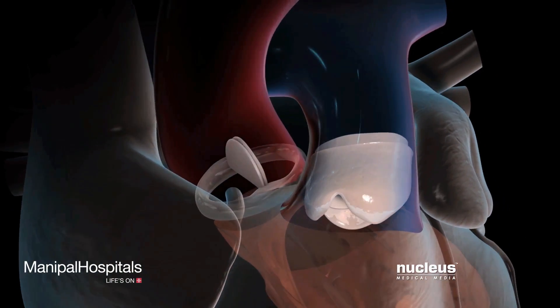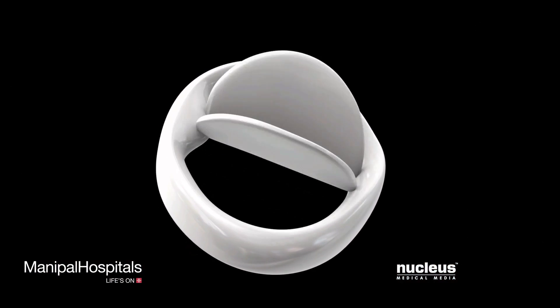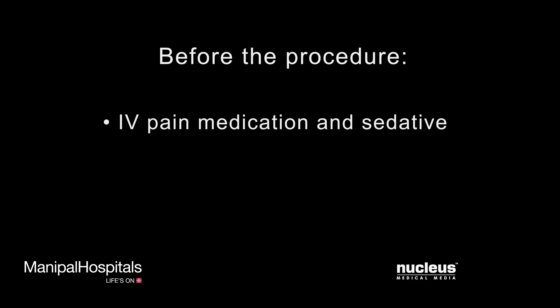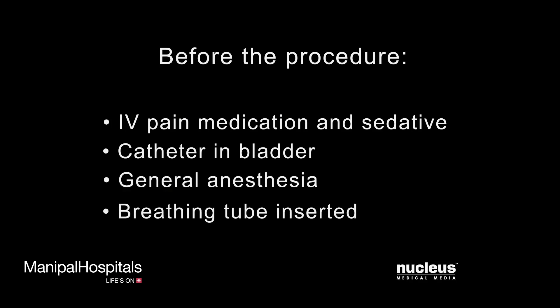An aortic valve replacement is performed to restore the valve to normal function. Before your procedure, an IV line will be started in your arm to provide fluids and medications. A catheter will be inserted into your bladder to drain urine. Aortic valve replacements are done under general anesthesia, meaning you will be asleep for the duration of the operation, and a tube will be placed through your mouth and into your windpipe to help you breathe during surgery.